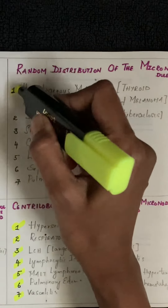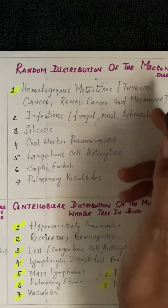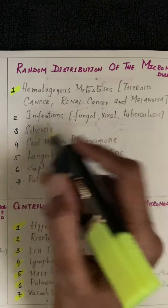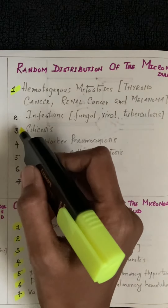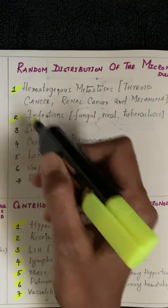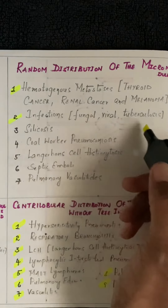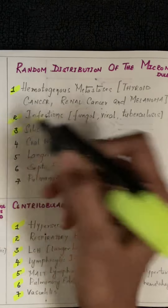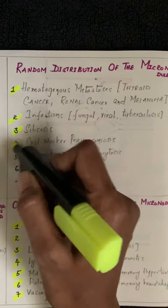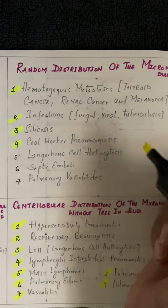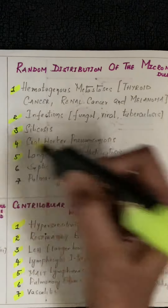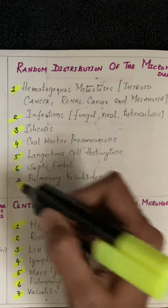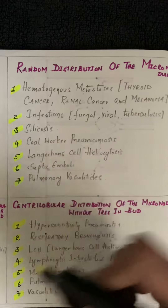For random distribution of micronodules, differentials include hematogenous metastasis (thyroid, renal, melanoma), infections (fungal, viral, tuberculosis), silicosis, coal workers' pneumoconiosis, Langerhans cell histiocytosis, septic emboli, and pulmonary vasculitis.